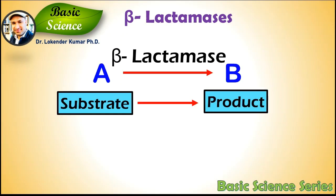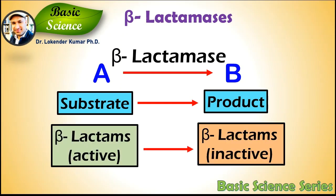In a simple example, an enzyme converts compound A to compound B by causing mechanical modification at a higher rate. The molecules upon which enzymes may act are called substrates, and the enzyme converts the substrate into different molecules known as products. In the case of beta-lactam enzymes, the substrate is the active beta-lactam antibiotic and the product is the inactive beta-lactam antibiotic.